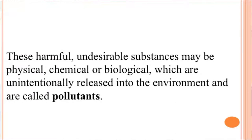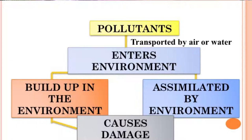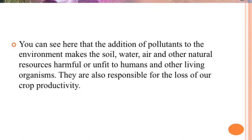As I have said before, pollution is the addition of unwanted and harmful substances into the environment, thereby not only causing health hazards but also causing harm to our agriculture and livestock. The most important question that comes to mind is: what are these unwanted harmful substances? These harmful undesirable substances may be physical, chemical or biological, which are unintentionally released into the environment, and these are called pollutants. Pollutants are transported by air or water, enter the environment, build up in the environment, get assimilated by the environment, and cause damage, as you can see in this particular slide.